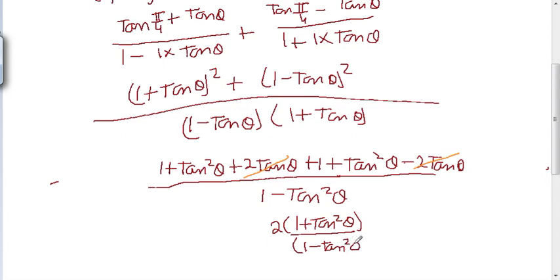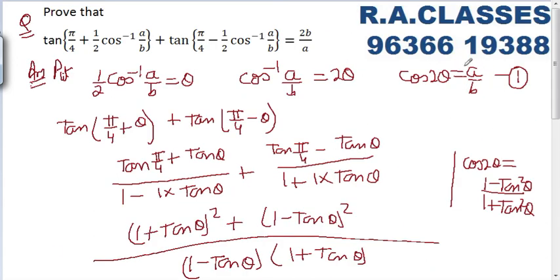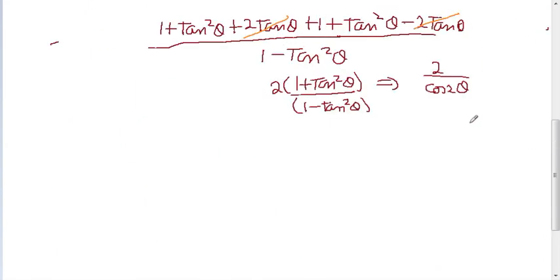हम जानते हैं कि cos2θ = (1 - tan²θ)/(1 + tan²θ)। तो (1 - tan²θ)/(1 + tan²θ) की जगह cos2θ लिखेंगे। Value आजाएगा 2/cos2θ। और हमने first equation में cos2θ का value निकाला था — cos2θ = a/b। तो value आजाएगा 2/(a/b) = 2b/a। यह proof हो गया। Thank you!